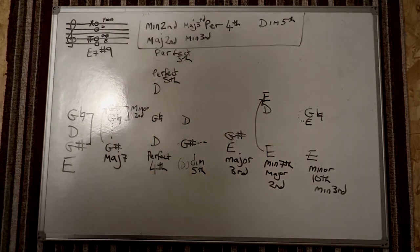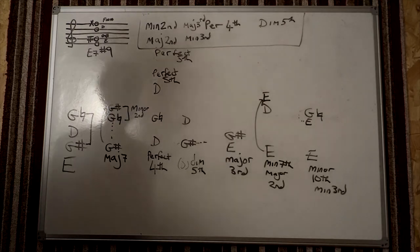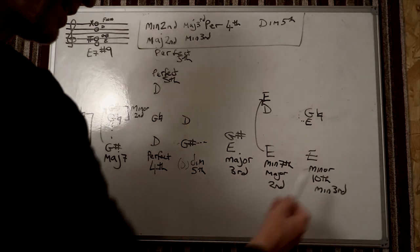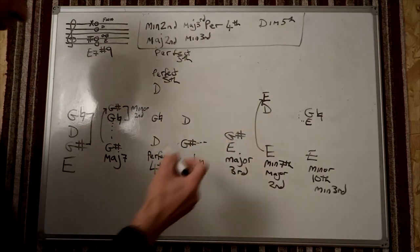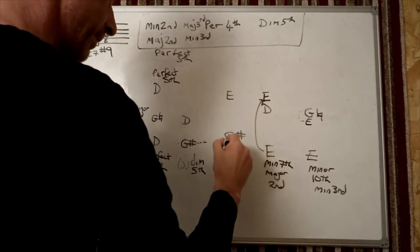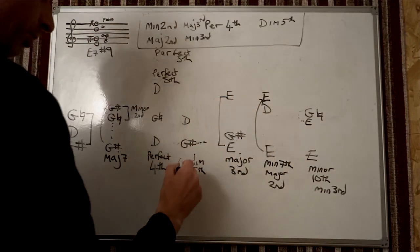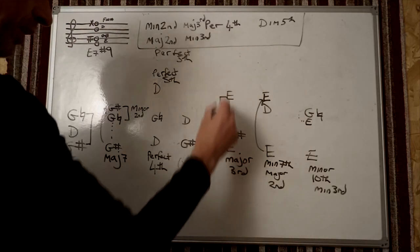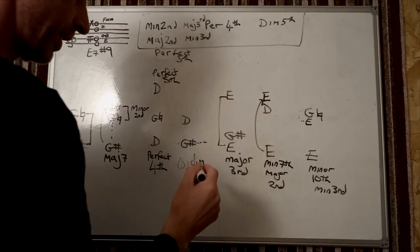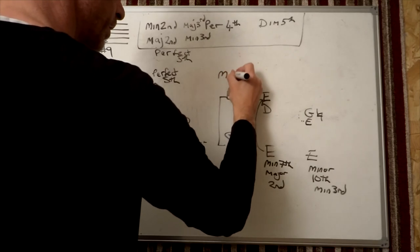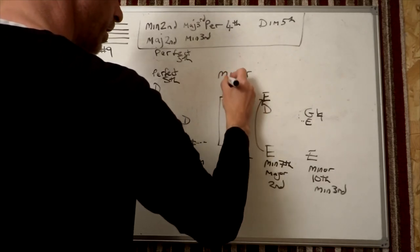Do we have a minor sixth? Well, when you invert some chords, you can start to say, what happens when you put an E on top of this? G-sharp to E. So a major third is also a minor sixth.